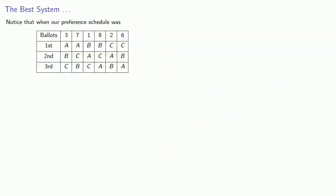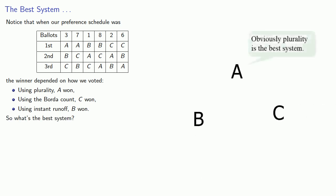So, notice that when our preference schedule was this, the winner depended on how we voted. Using plurality, A won. Using the Borda count, C won. And using instant runoff, B won. So, what's the best system? Well, obviously, it's the system that elects the choice that you want. But we're supposed to choose the system before we run the election.